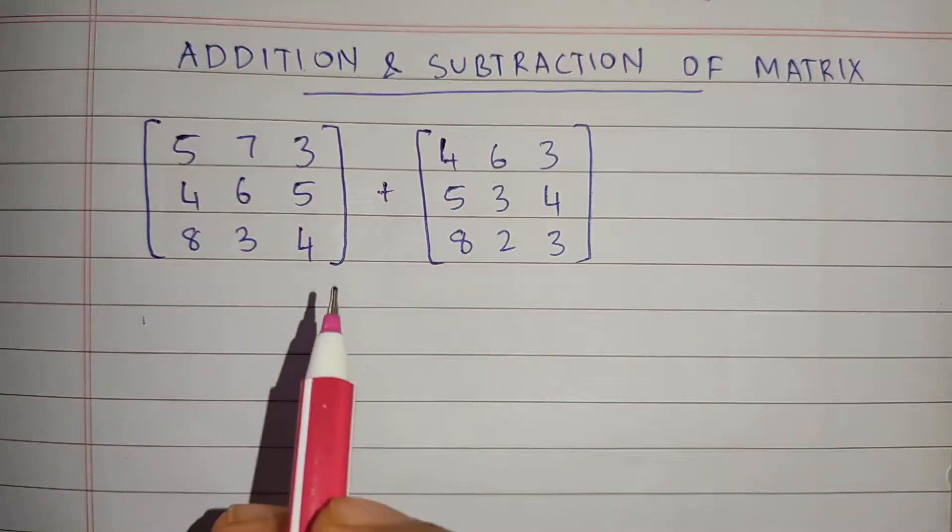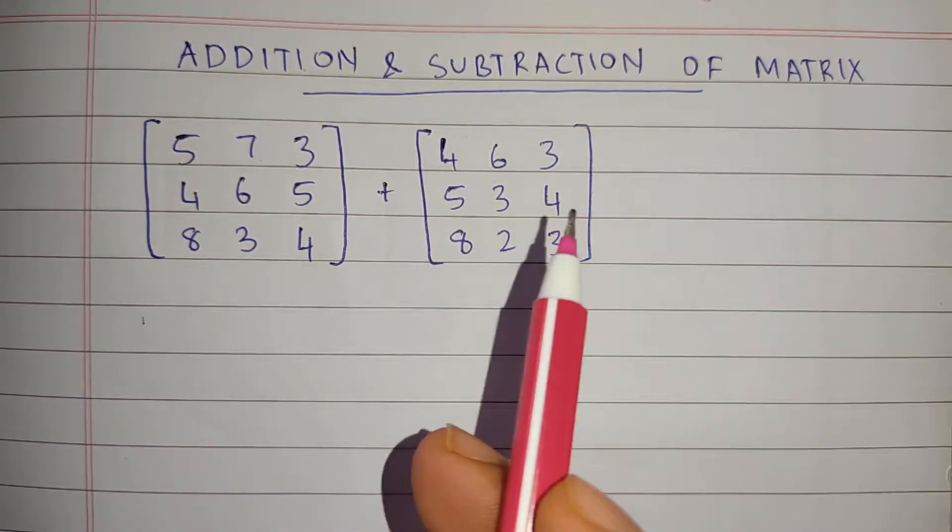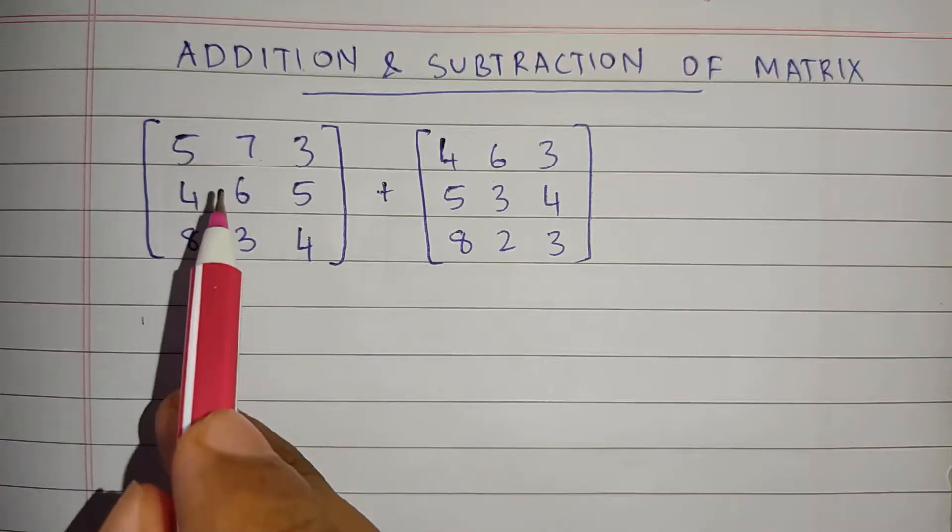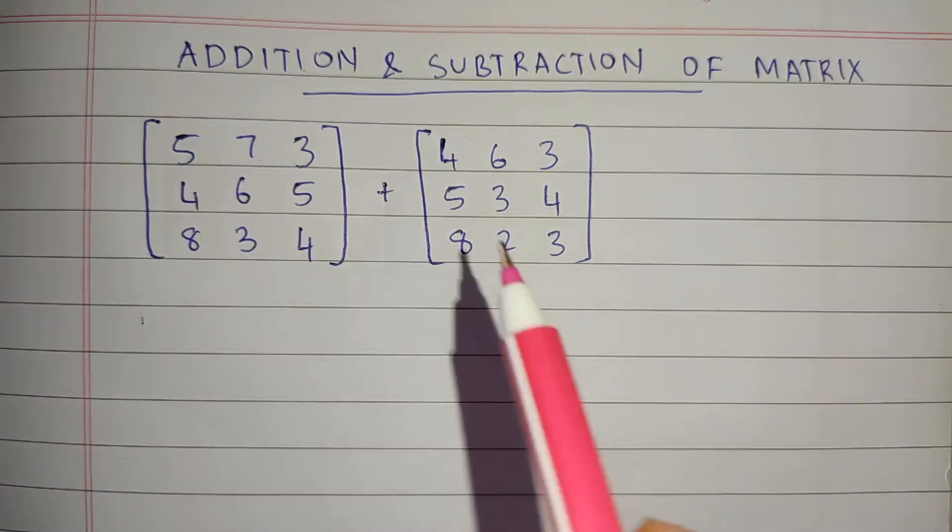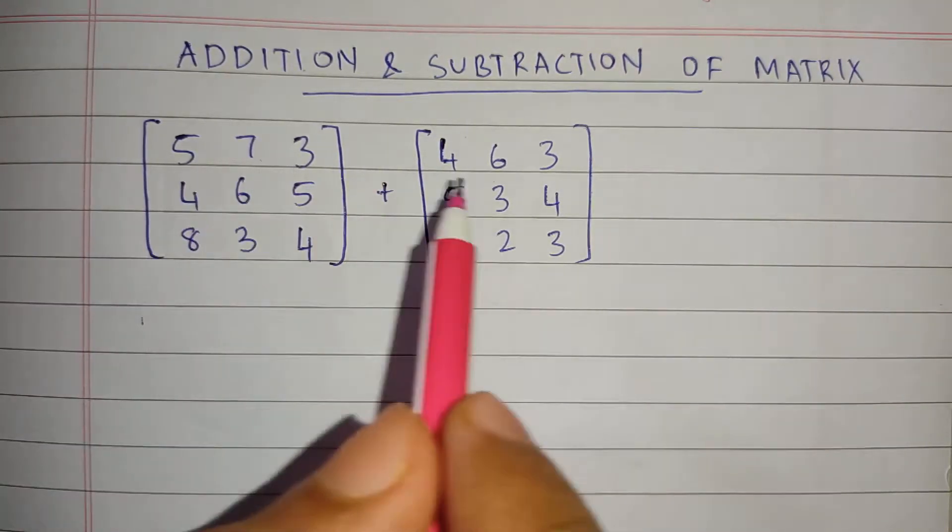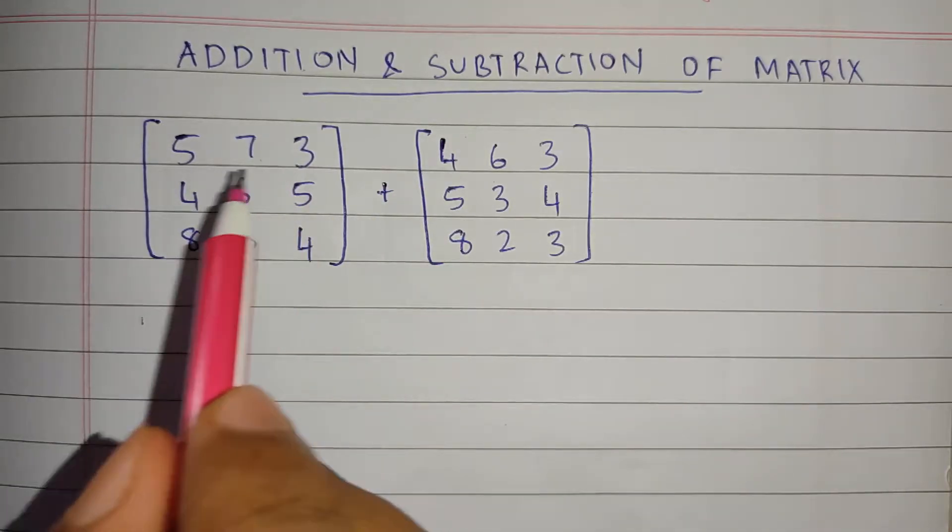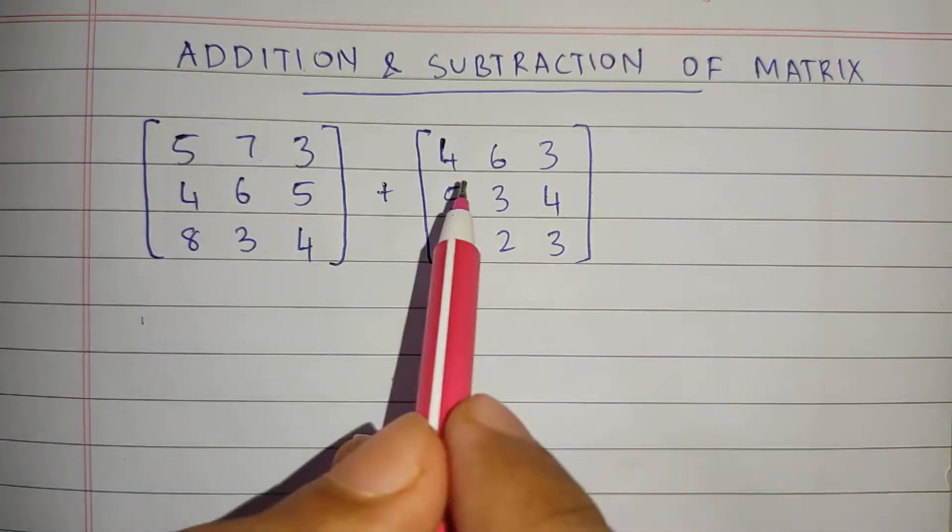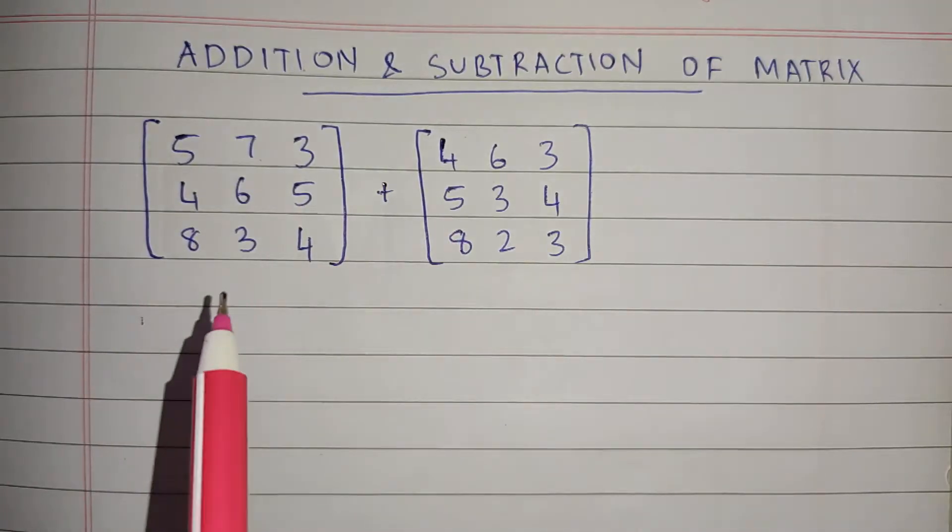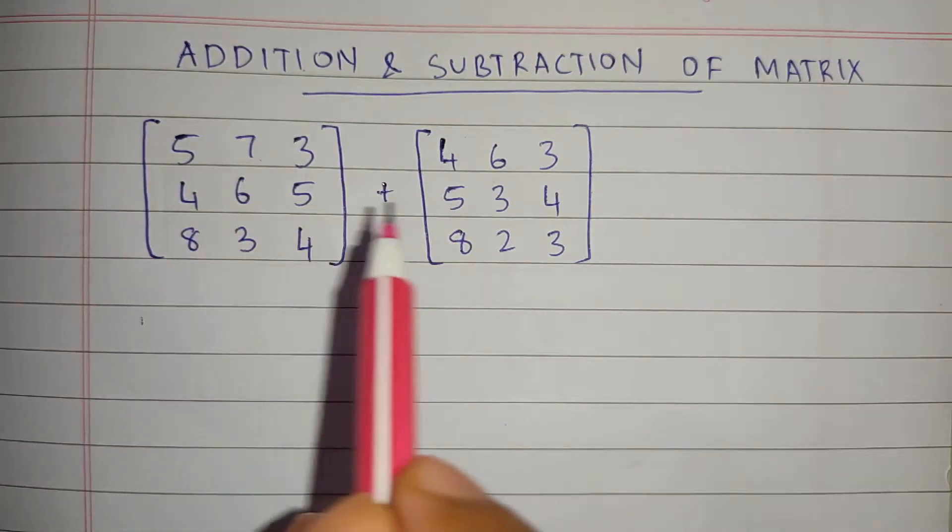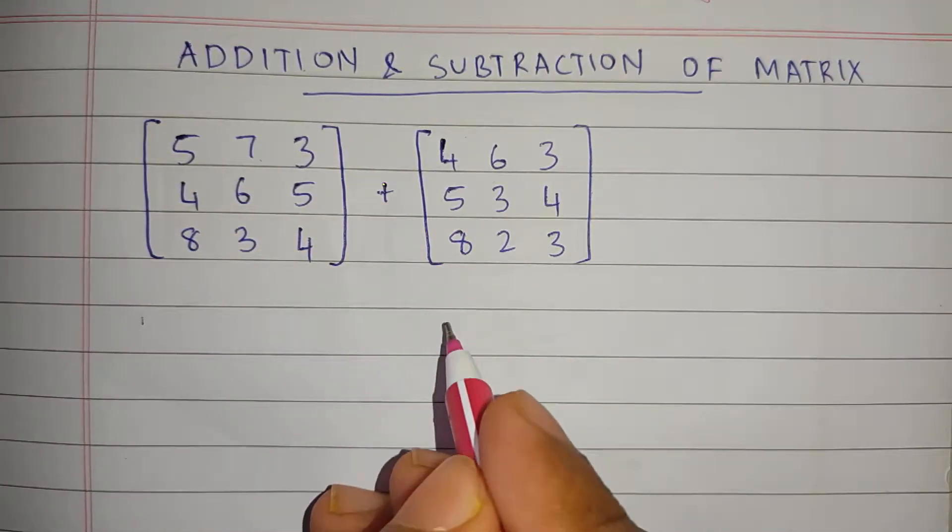Hello guys, we are going to discuss the addition and subtraction of a matrix of order 3 into 3. We are taking two random matrices of the order 3 into 3, and I'm going to show how to add two 3 into 3 matrices.